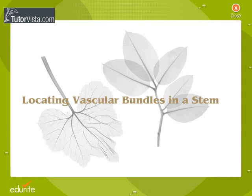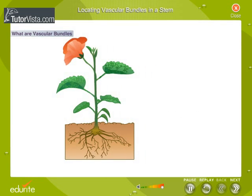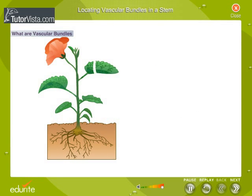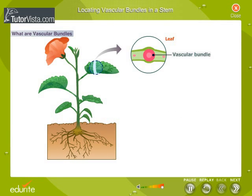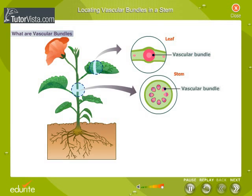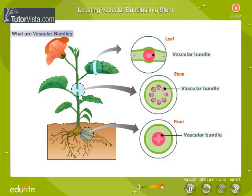Locating Vascular Bundles in a Stem. Vascular bundles are strands of conducting tissue extending lengthwise through the stems and roots of plants.